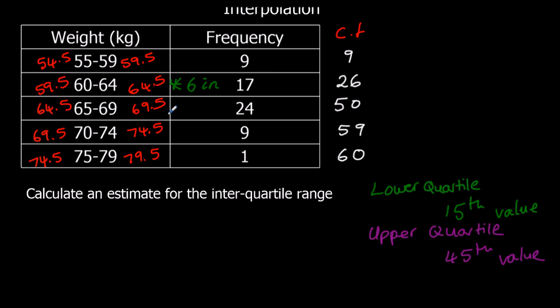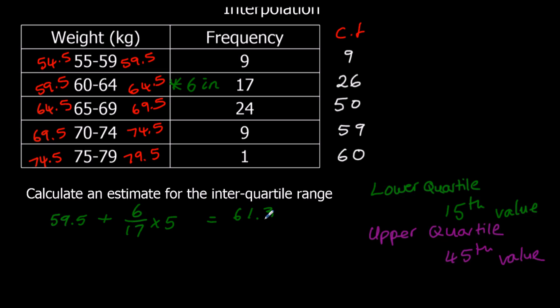Interpolation works the same whether we're working on a quartile or a median. It's the lower class boundary plus how many in — 6 — out of how many — 17 — times the class width, which in this case is 5. Typing that into the calculator, to 3 significant figures I've got 61.3. I'm going to keep the whole number stored in the calculator because I'm going to be using it again to find the interquartile range.